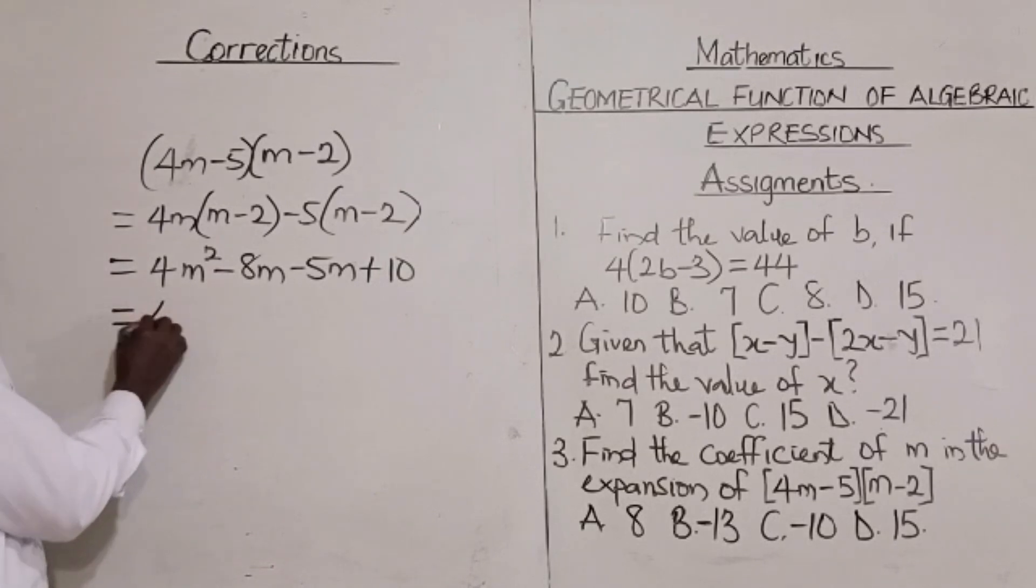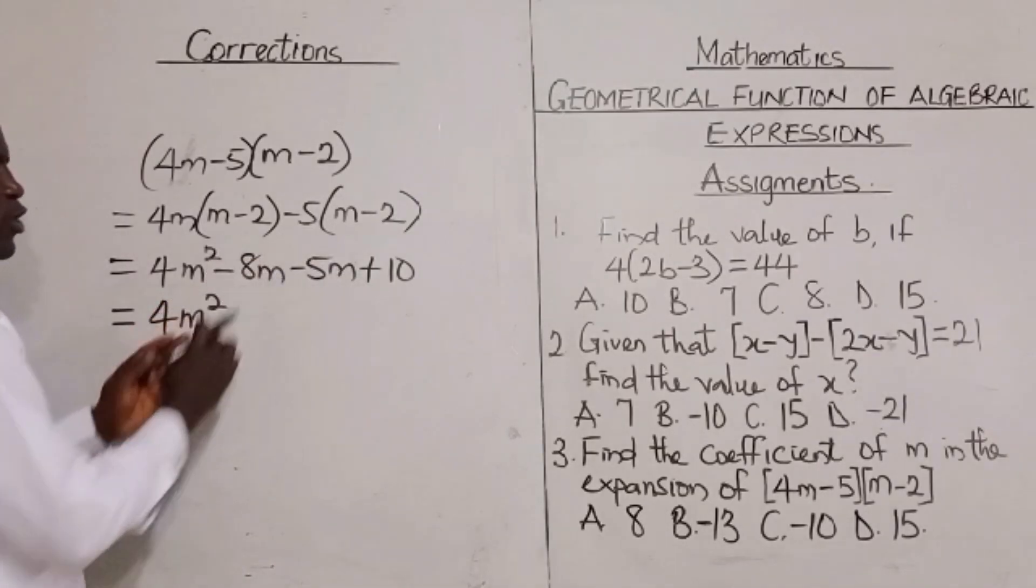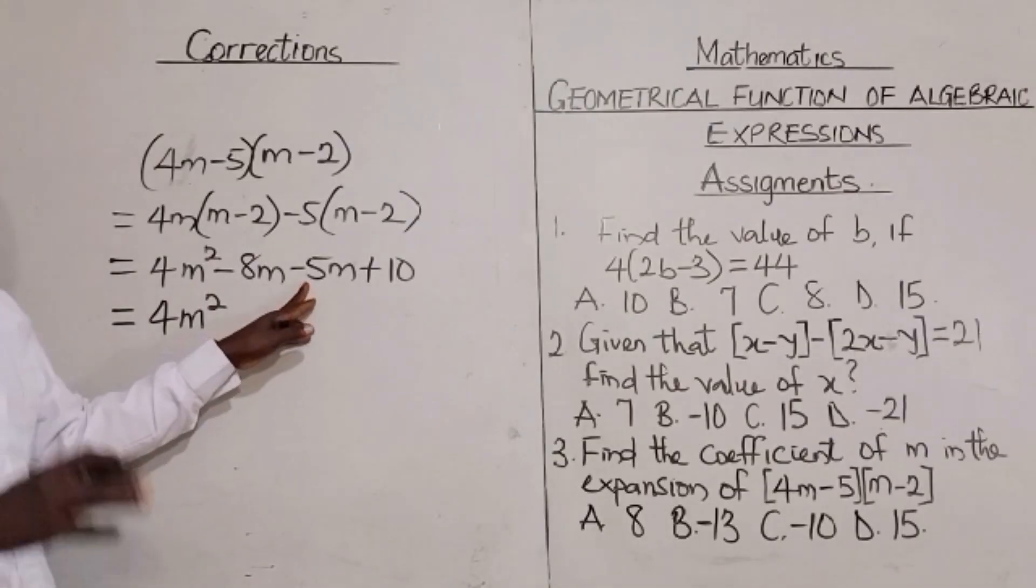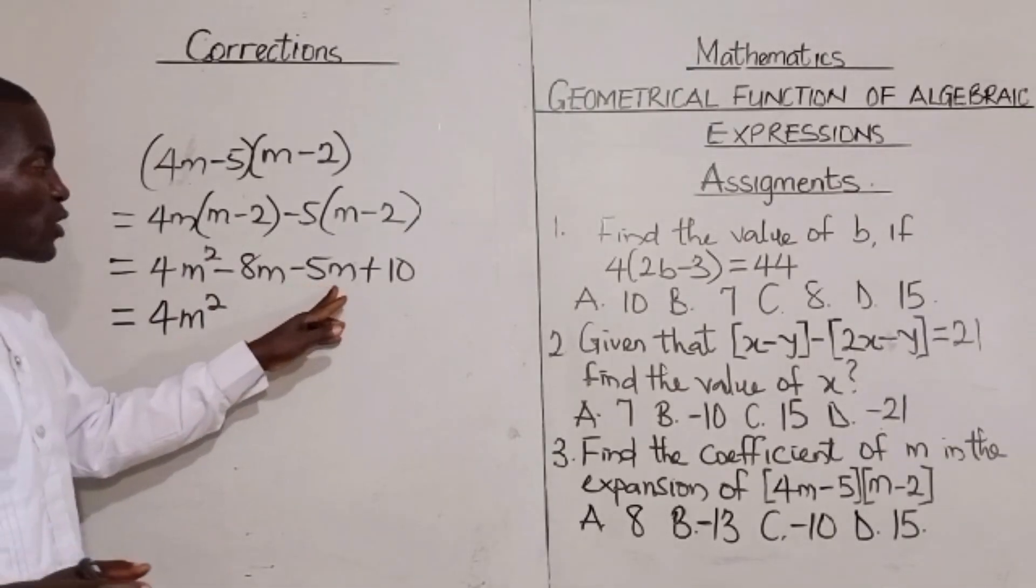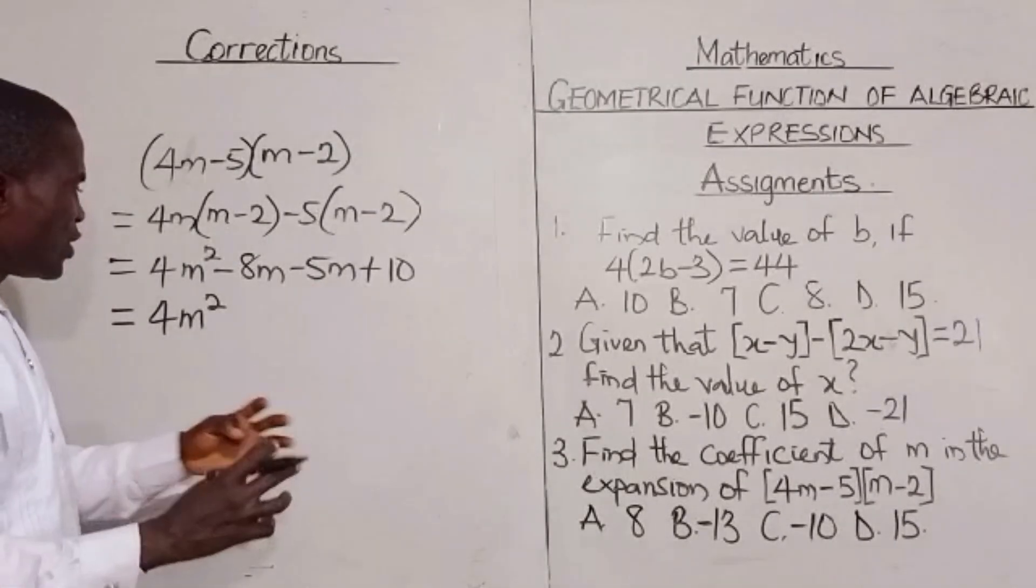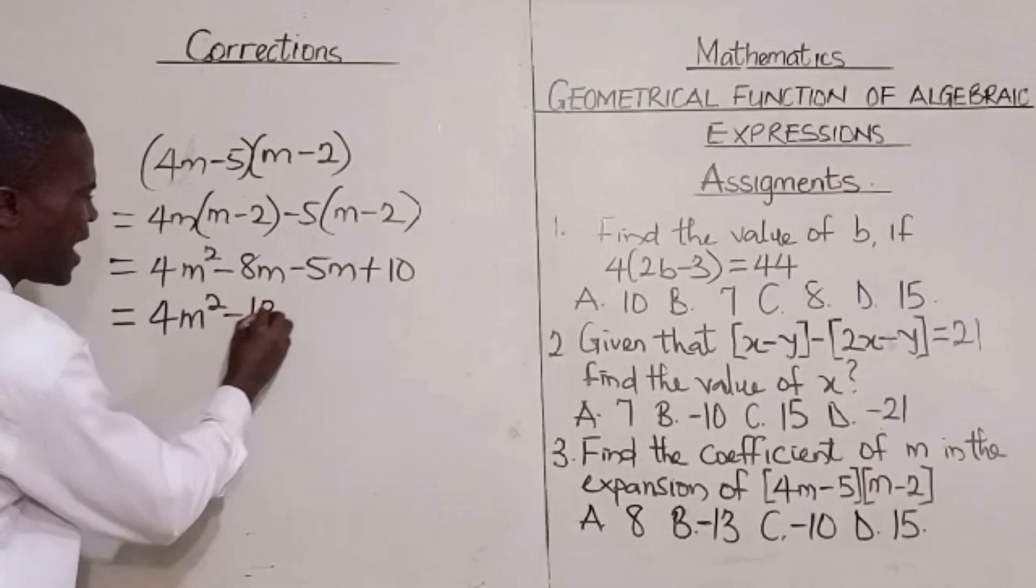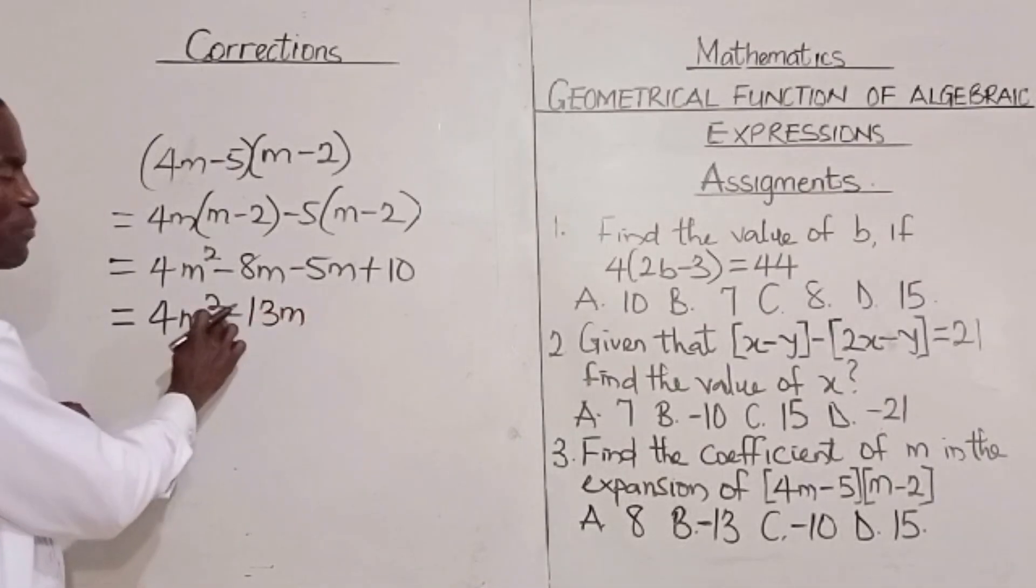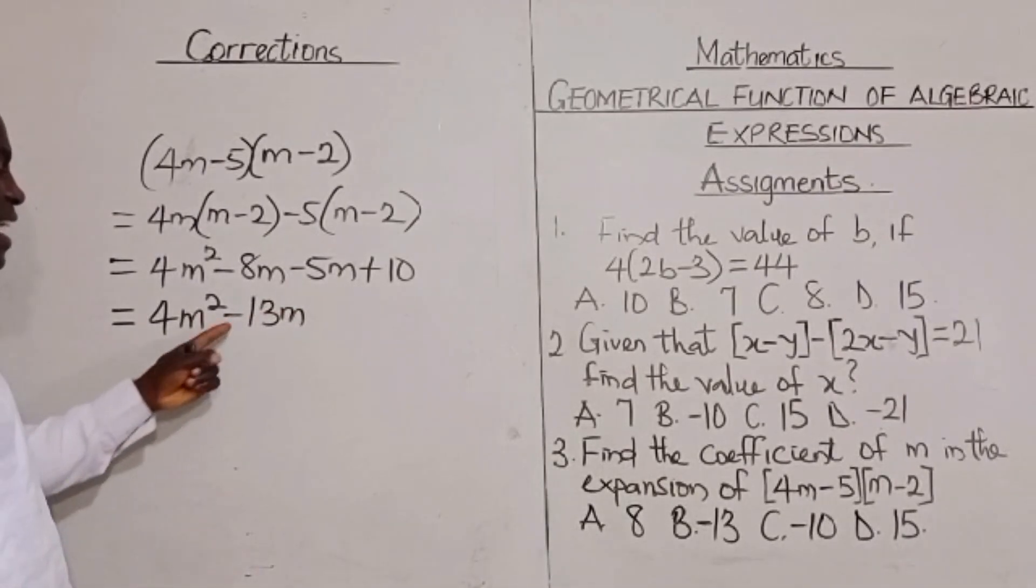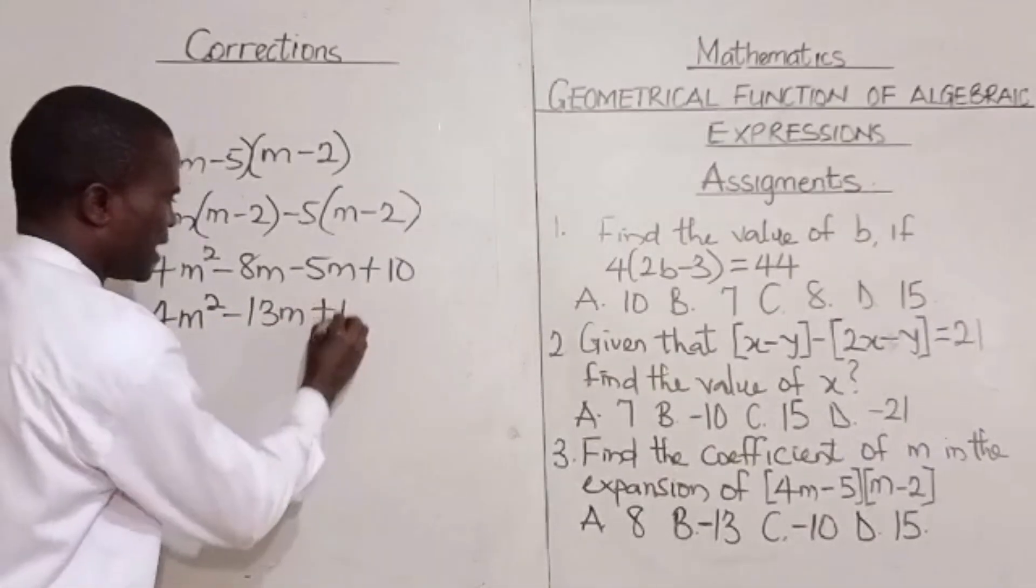Now, let's proceed. Here, we are going to have 4m squared minus 8m minus 5m. That is to say, I am owing somebody minus 8m. I am still owing another person entirely minus 5m. So altogether, the amount of money that I am owing has to be minus 13m. I have to put minus to indicate that that is the amount of money that I am owing. And so we have plus 10.